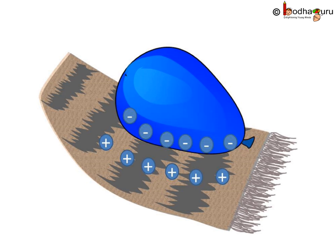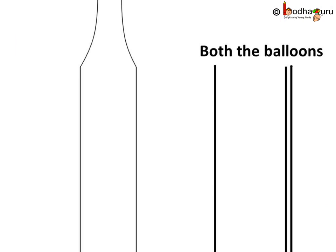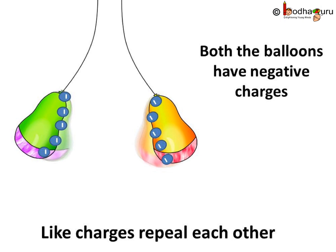We often create static electricity by rubbing two materials. Such charge can be positive or negative. When we create static electricity by rubbing two objects — say we rub a balloon with woolen cloth — one object gets a positive charge and the other gains a negative charge. To understand this, we take two balloons and hang them close to each other without touching. We rub both balloons with cloth, giving them the same kind of charge. When released, the balloons repel each other — same kind of charges repel, just like the north pole of a magnet repels another north pole. Opposite charges attract each other.